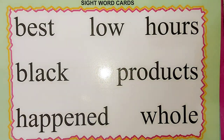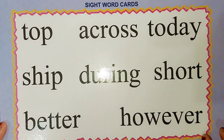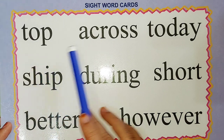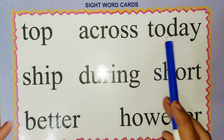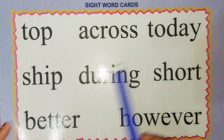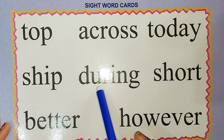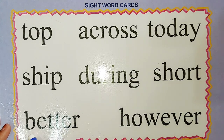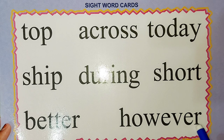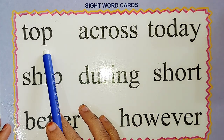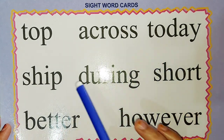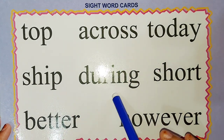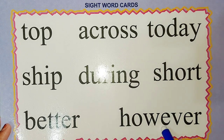The next word is T-O-P: top. A-C-R-O-S-S: across. T-O-D-A-Y: today. S-H-I-P: ship. D-U-R-I-N-G: during. S-H-O-R-T: short. B-E-T-T-E-R: better. H-O-W-E-V-E-R: however. Once again: top, across, today, ship, during, short, better, however.